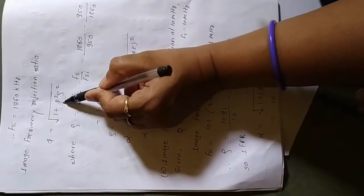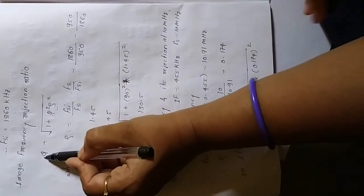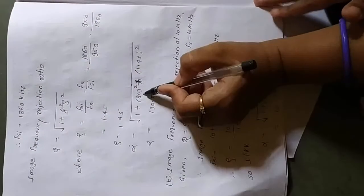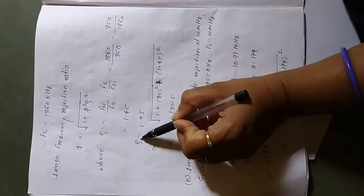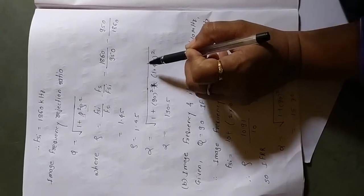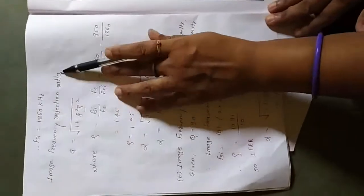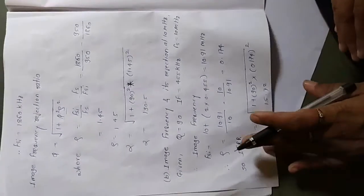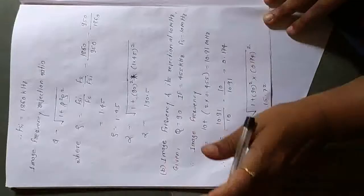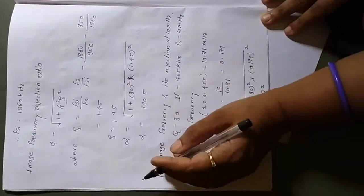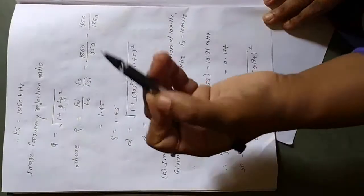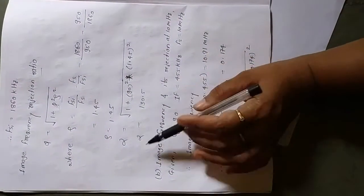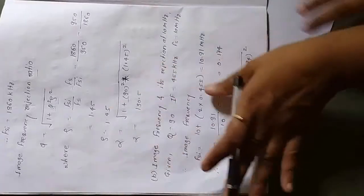Now we can calculate the image frequency rejection ratio. Alpha = sqrt(1 + Q²ρ²) = sqrt(1 + 90² × 1.45²), which gives alpha = 130.5. Image frequency rejection ratio is a unitless quantity because it is a ratio. This completes Part A of the problem.